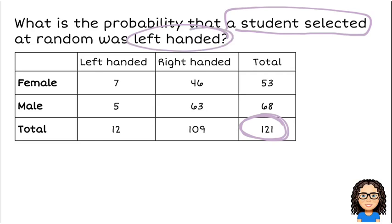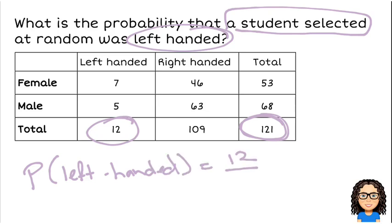Well, in total, I have 12 left-handed students. Seven are female, five are male. But altogether there are 12 students who are left-handed. So the probability of being left-handed is 12 out of 121. And you can leave that in fraction form, or if you want to change it to decimal, you can.